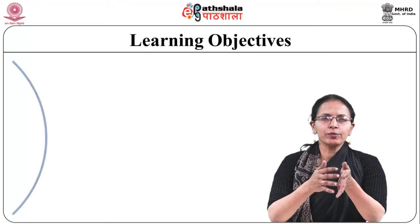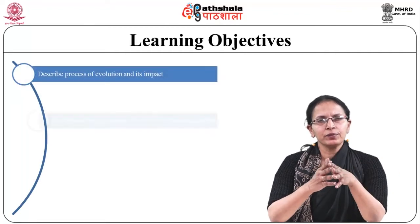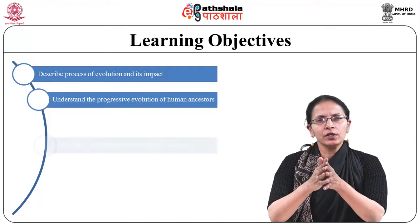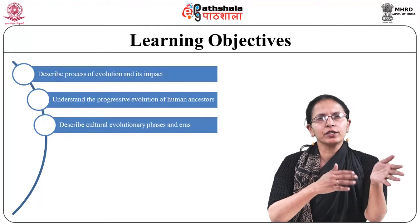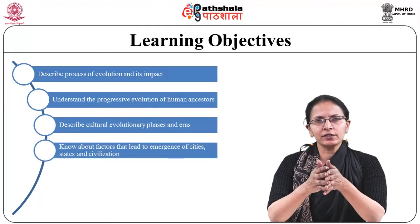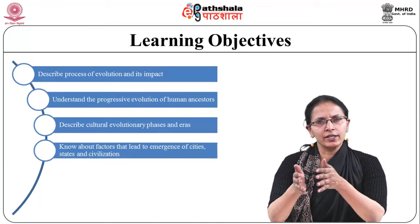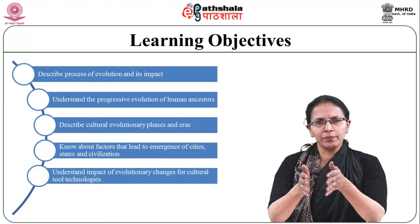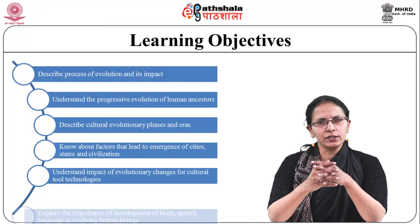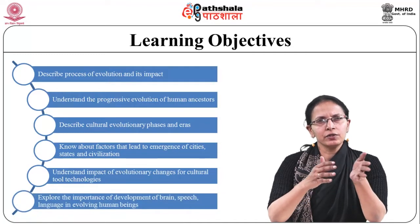The learning objectives of the module are to describe the process of evolution and its impact, to understand the progressive evolution of human ancestors, to describe the cultural evolutionary phases and eras, to know about the factors that lead to the emergence of cities, states and civilization, to understand the impact of evolutionary changes for cultural tool technologies, and to explore the importance of the development of the brain, speech, and language in the evolutionary process of human beings.